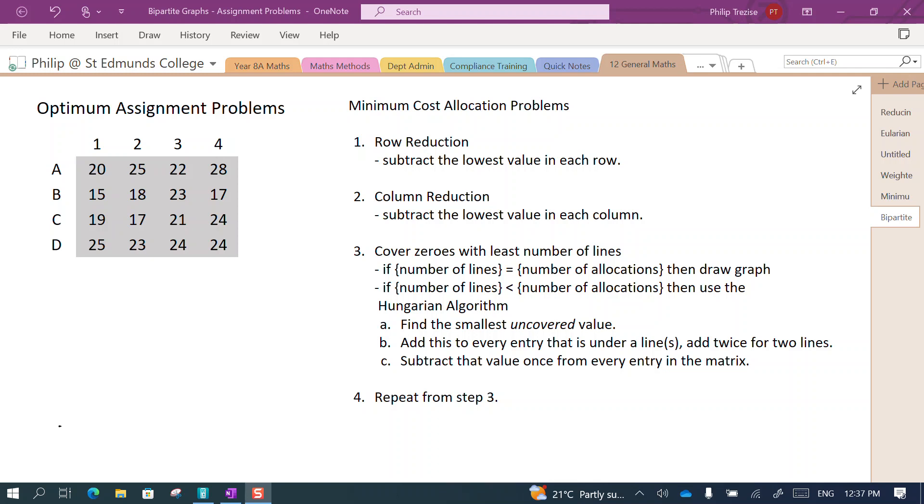Hi everyone, I'm going to demonstrate an optimum assignment problem. In this example we have four people, A B C D, and we have four different jobs, job 1 2 3 and 4. The numbers in the grid represent the costs for each person to do the job. So person A will do job number one for $20 but they'll charge $25 to do job number two, and so on.